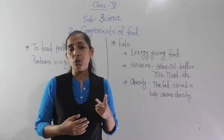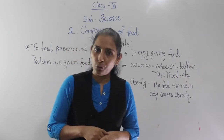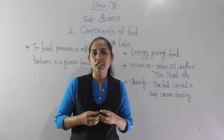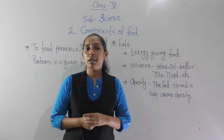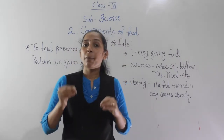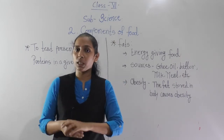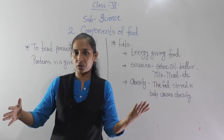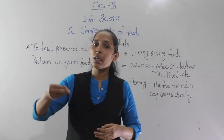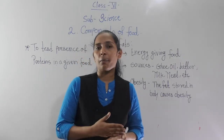Up till now we have discussed two nutrients — carbohydrates and proteins. In the beginning we said that different food materials contain different types of nutrients, and some food materials contain more than one nutrient. But among all, some nutrients are present in greater amounts. For example, rice contains carbohydrates and also some protein, but it contains a greater amount of carbohydrate — so rice is called carbohydrate-rich food.